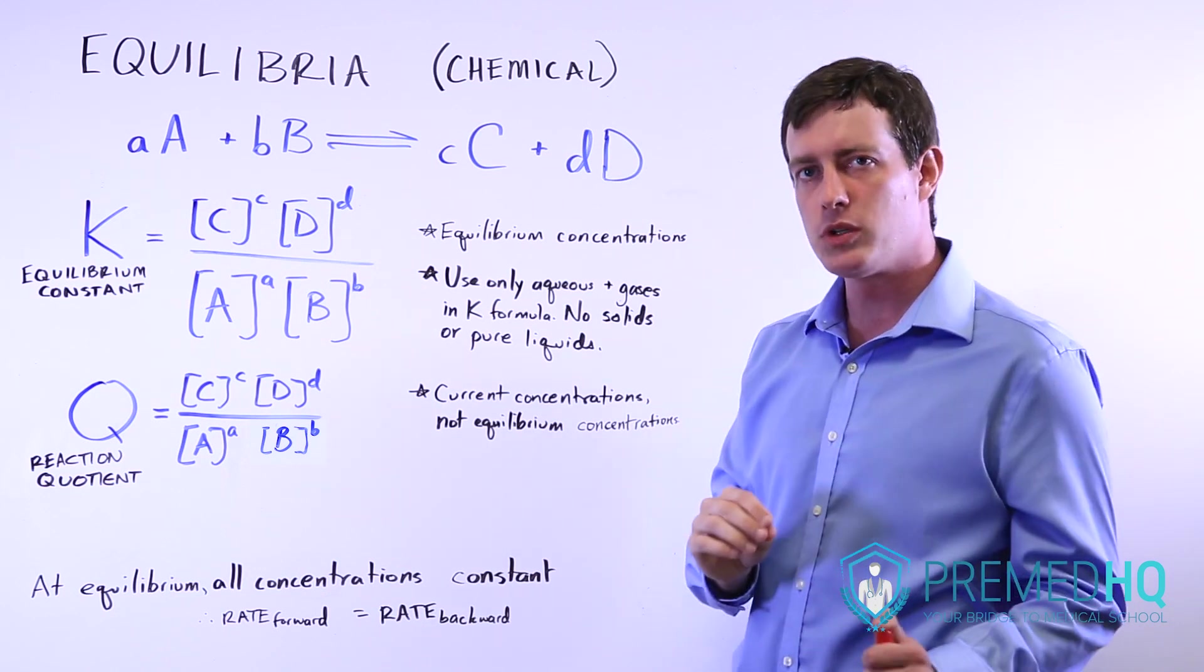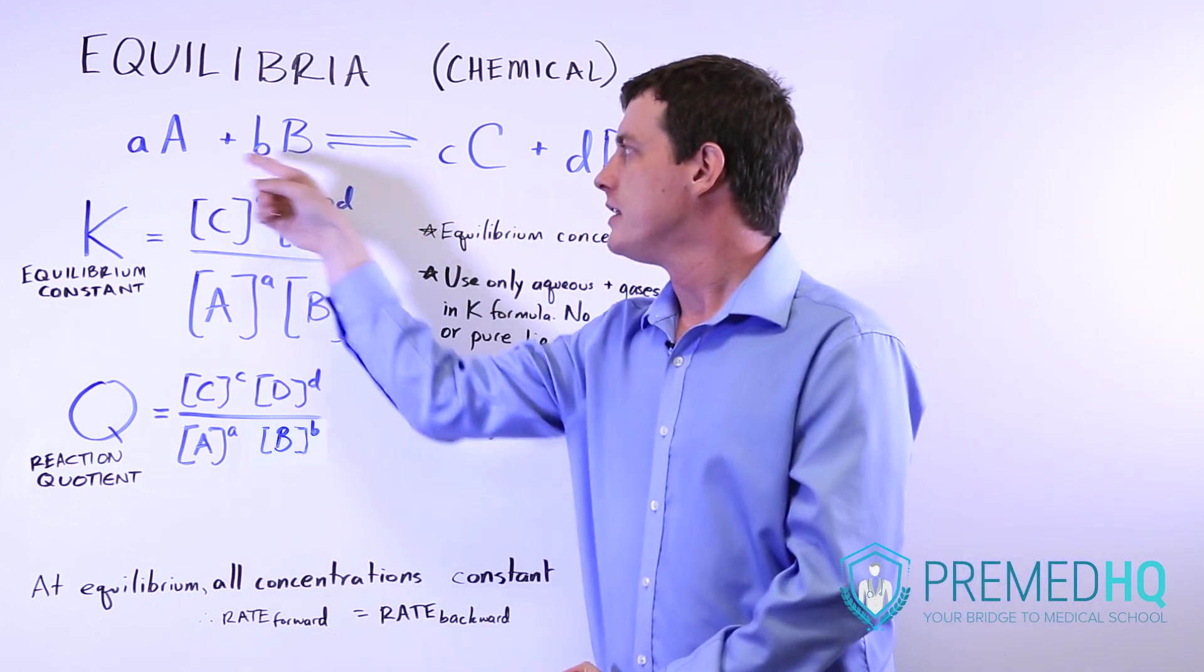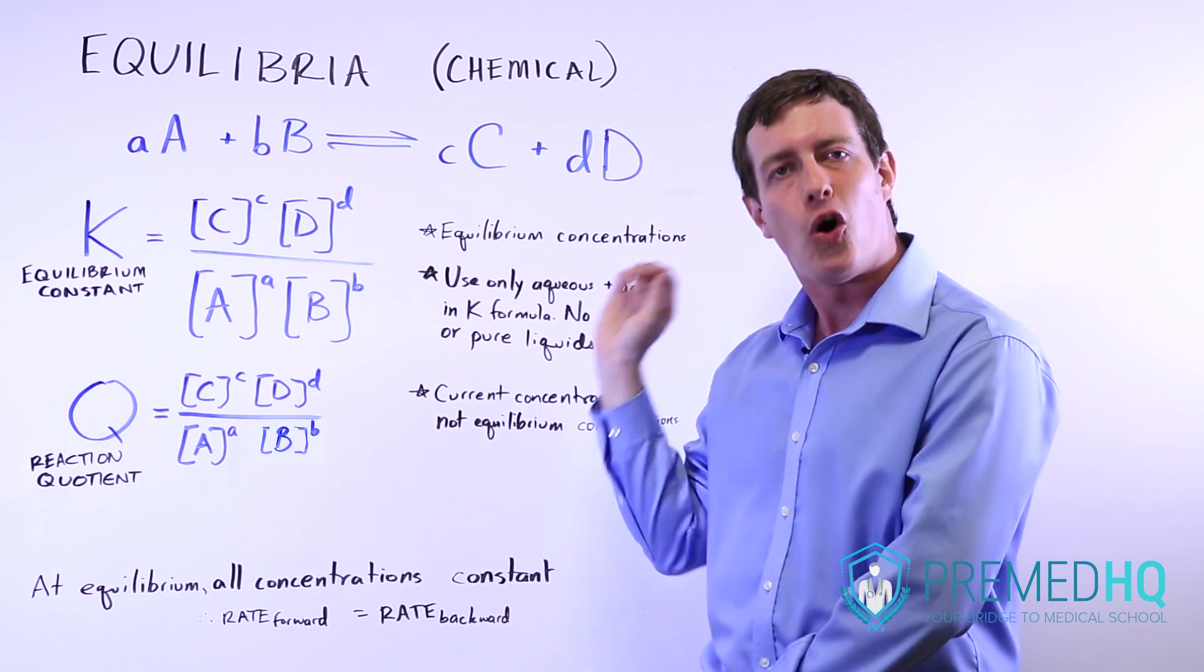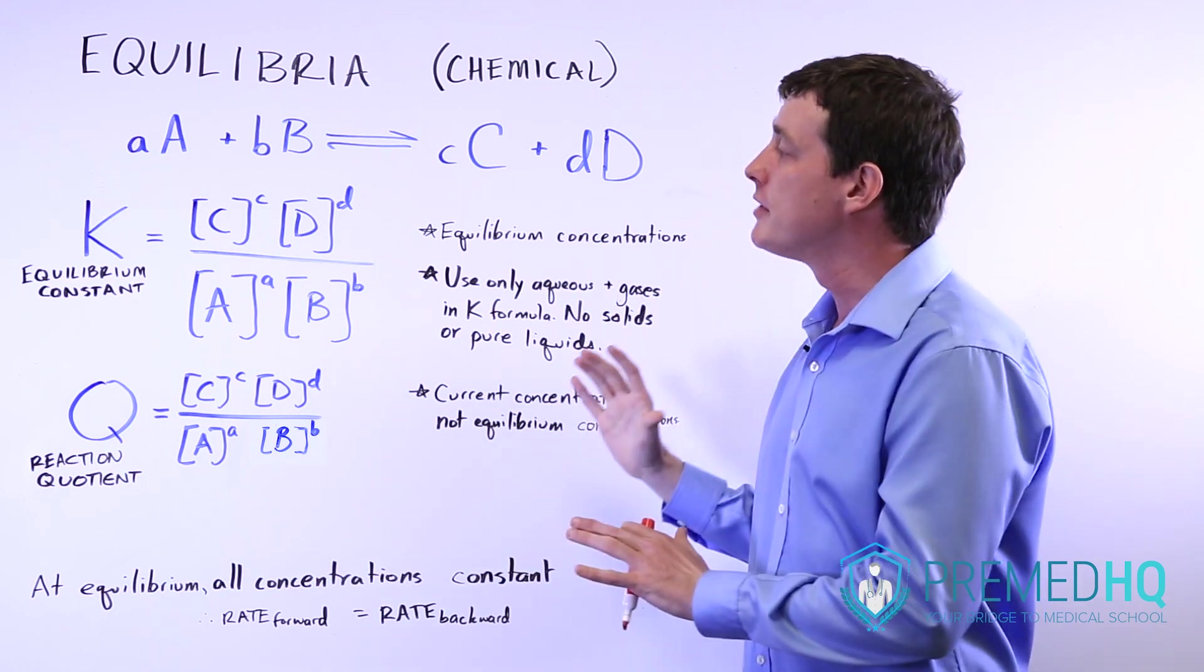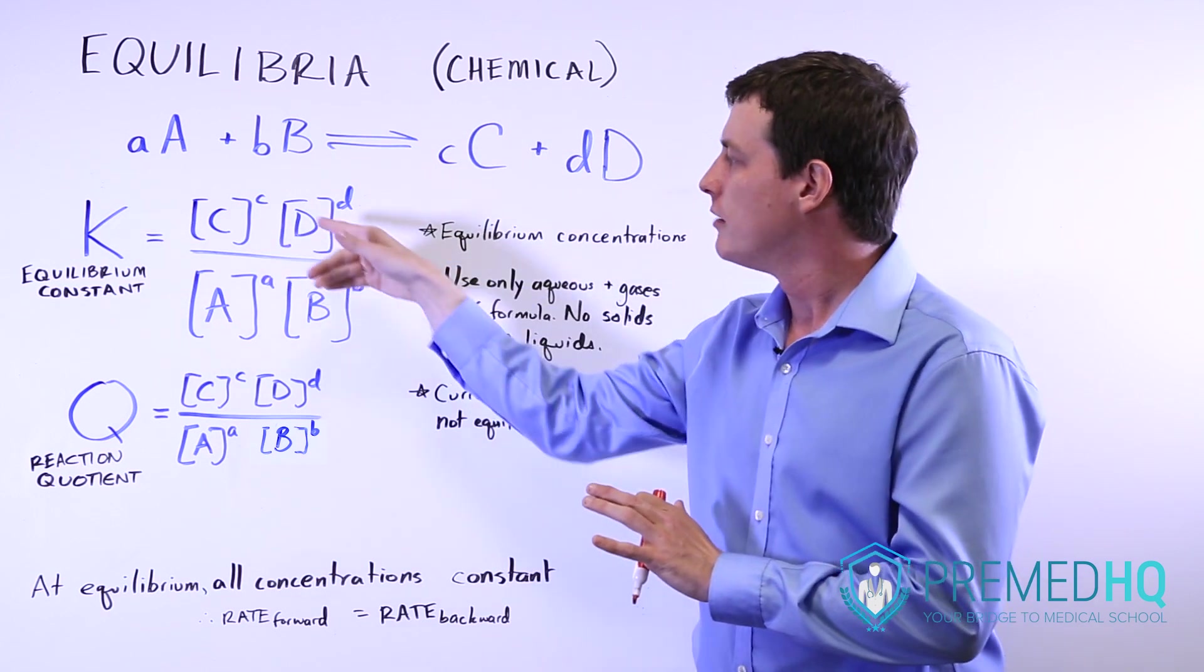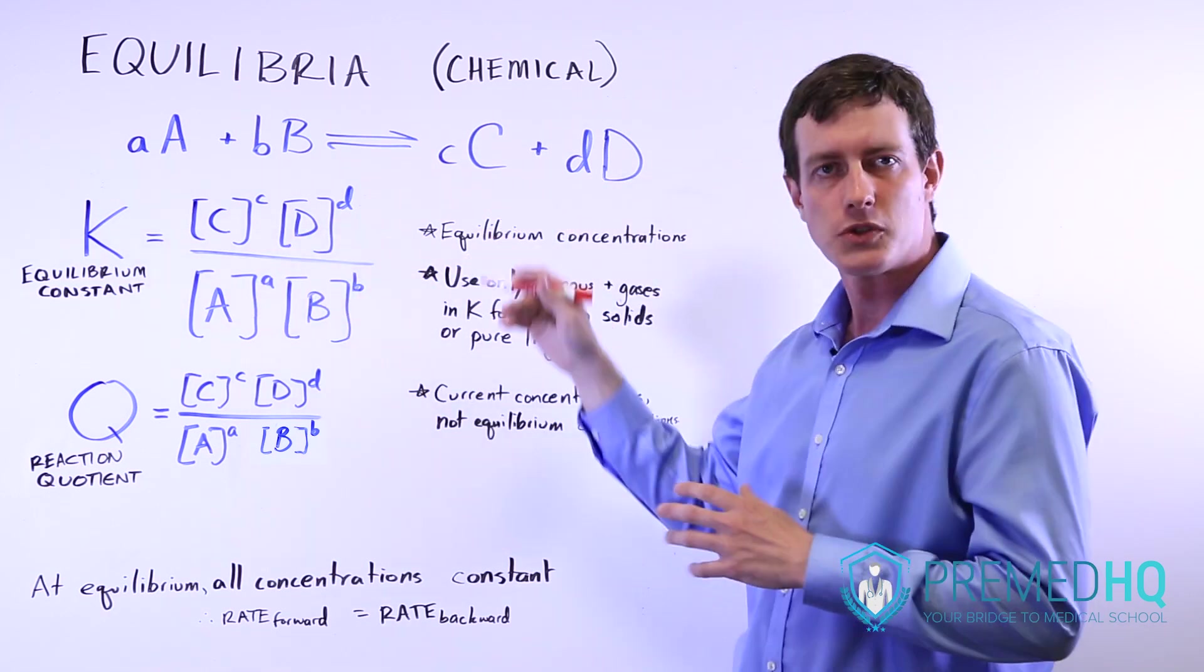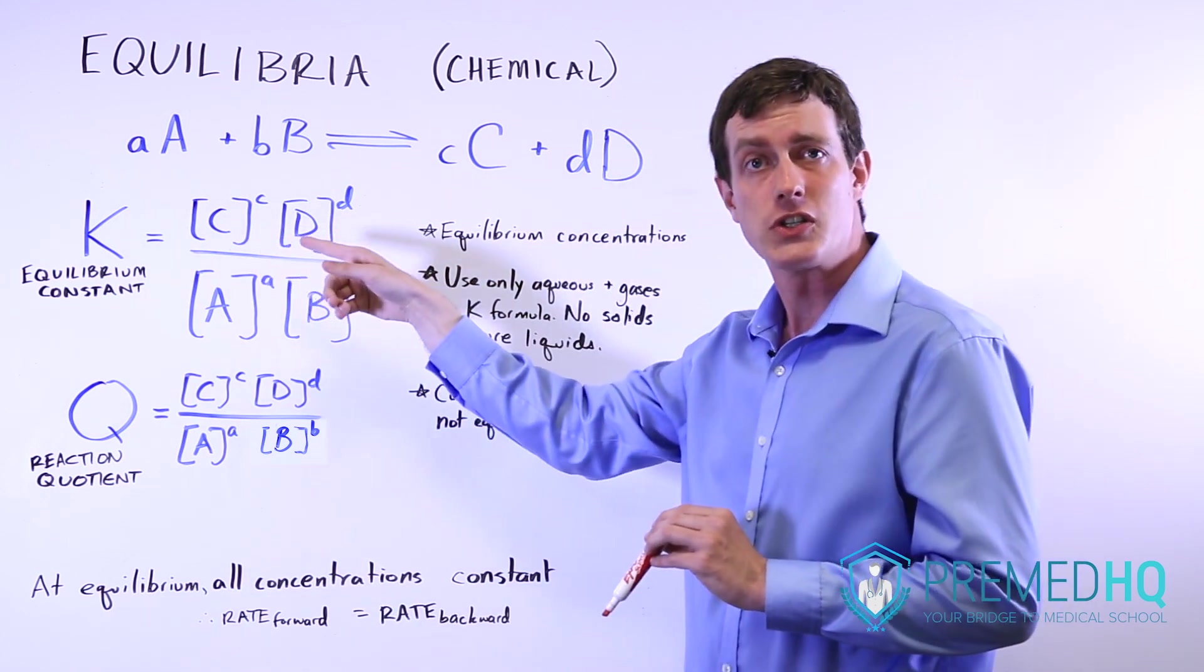This is one distinction between equilibrium and rate. Rate only considers the amount of reactants, and the coefficients aren't always aligned with the stoichiometry. With equilibrium, it's both the products and the reactants, and stoichiometry holds no matter what. That is the exponent that you raise each of these concentrations to.